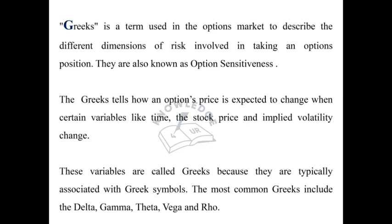The most common Greeks include the Delta, Gamma, Theta, Vega, and Rho.